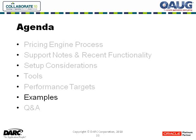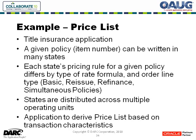Now we'll show a couple of examples. The first two come from the same client I've been working with — a real estate title insurance company. This company sells title insurance policies that are modeled as item numbers. Those policies can be written typically in one or more states, and for any given state, a given policy will have a different pricing rule based on the state, sometimes based on the county where the policy is written, and also on the type of rate applied — basic rate, reissue, refinance, or simultaneous.